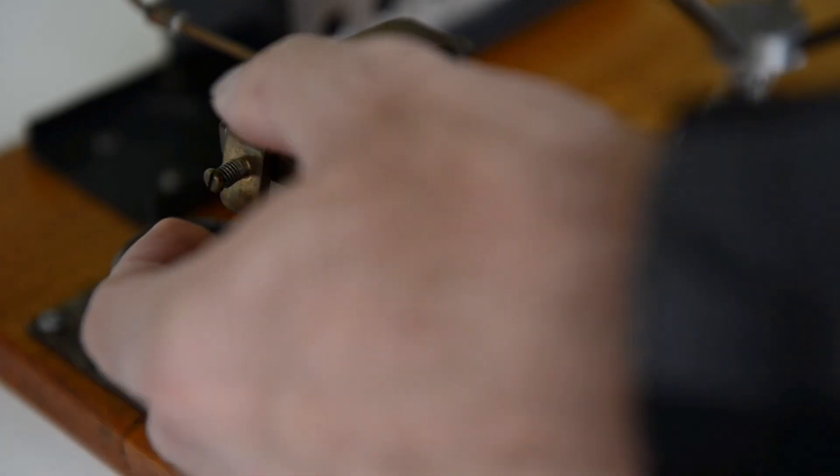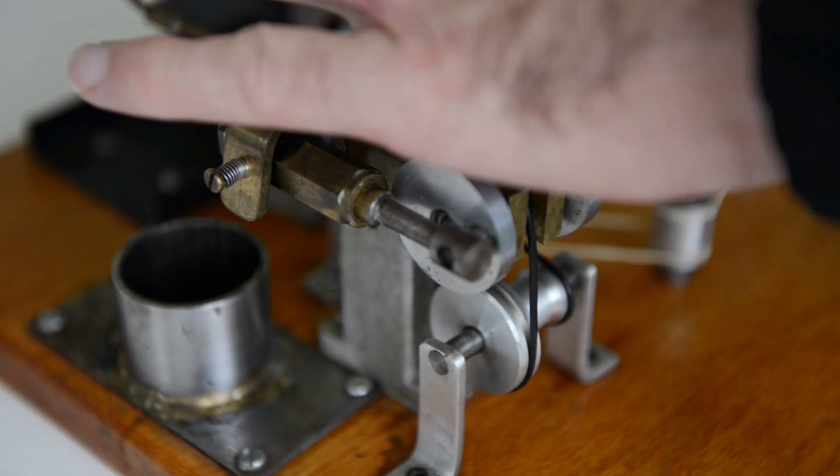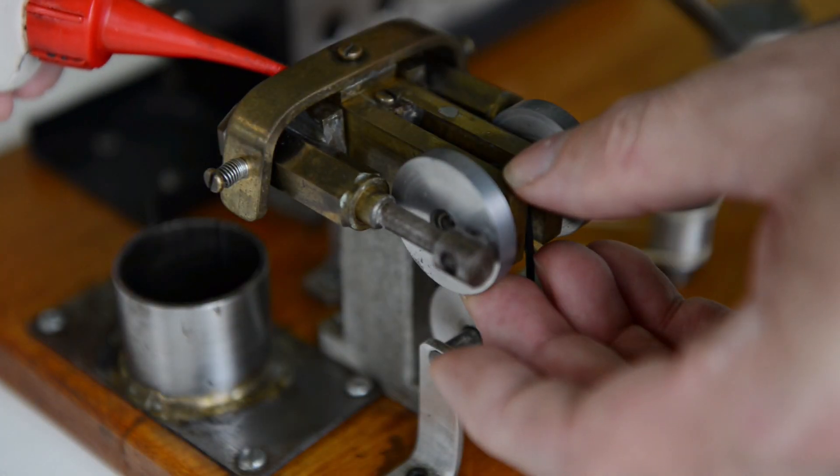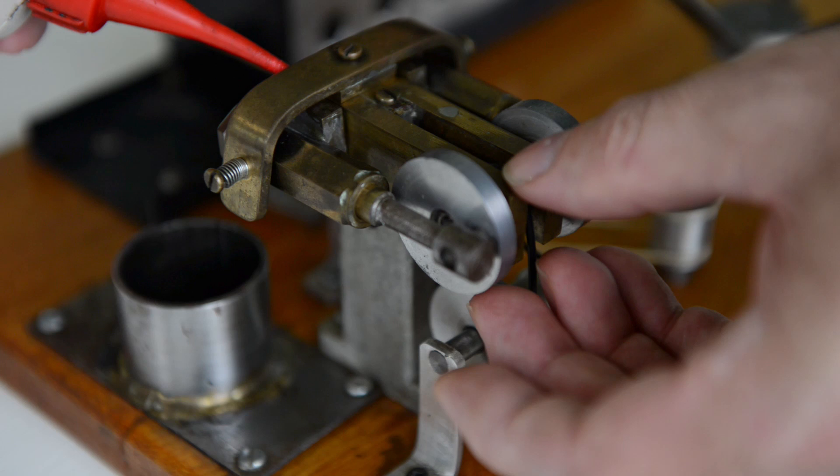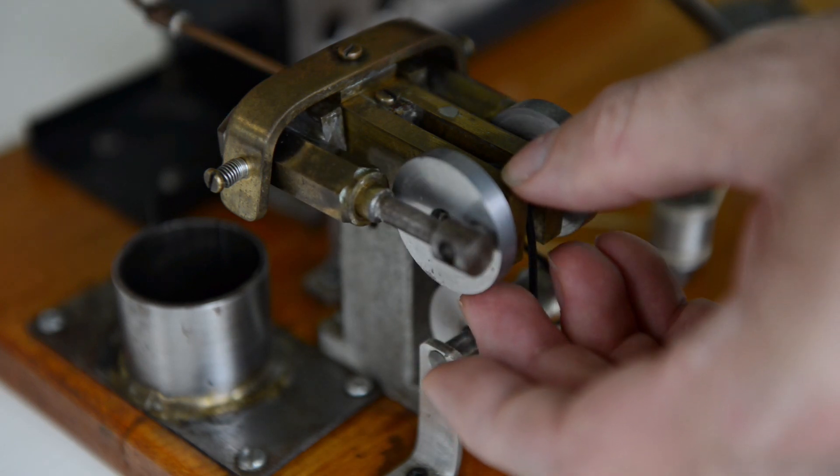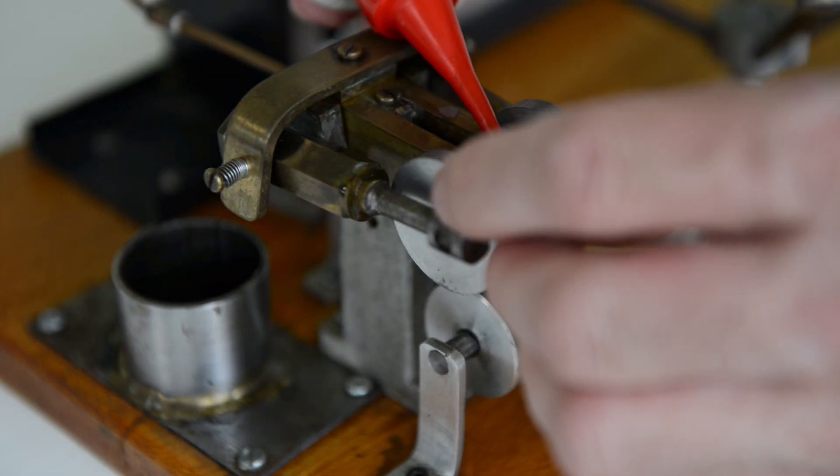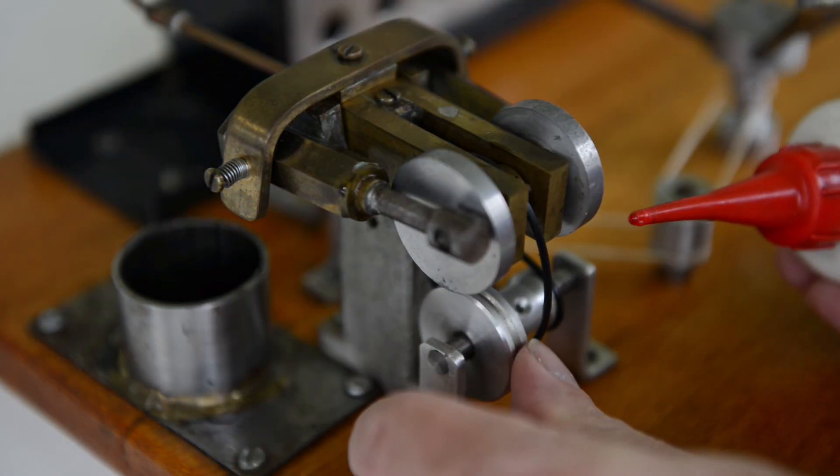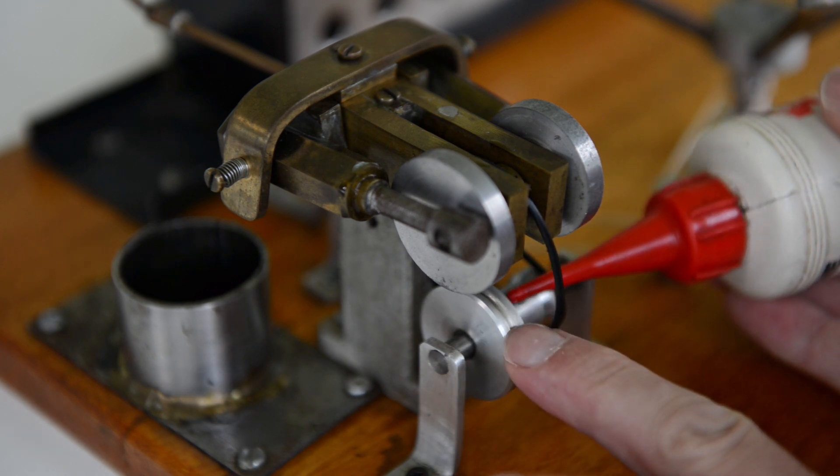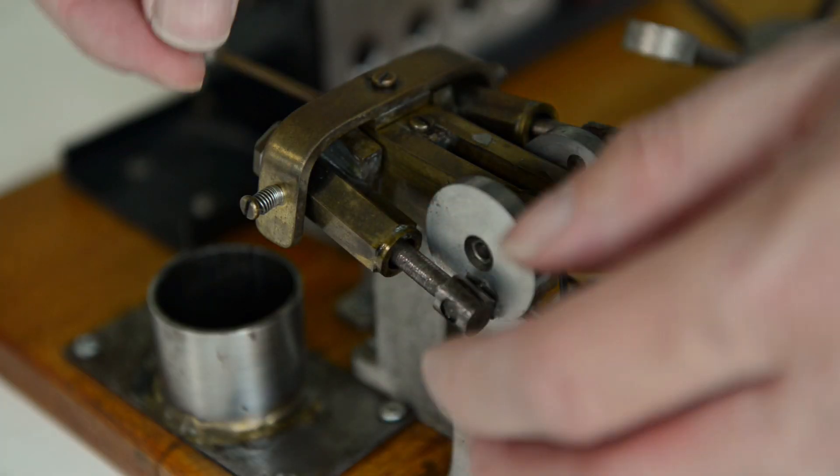Now I loosen the tension screws on each side of the cylinders. This is done so that I can put a little oil down in between where the cylinders oscillate on the engine block. I also put a little oil on the pistons and on the crankshaft. I also oil parts of the gearbox, then I tighten the tension screws back up.